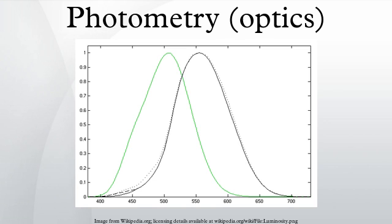Radiant energy outside the visible spectrum does not contribute to photometric quantities at all, so for example a 1000W space heater may put out a great deal of radiant flux, but as a light source it puts out very few lumens.